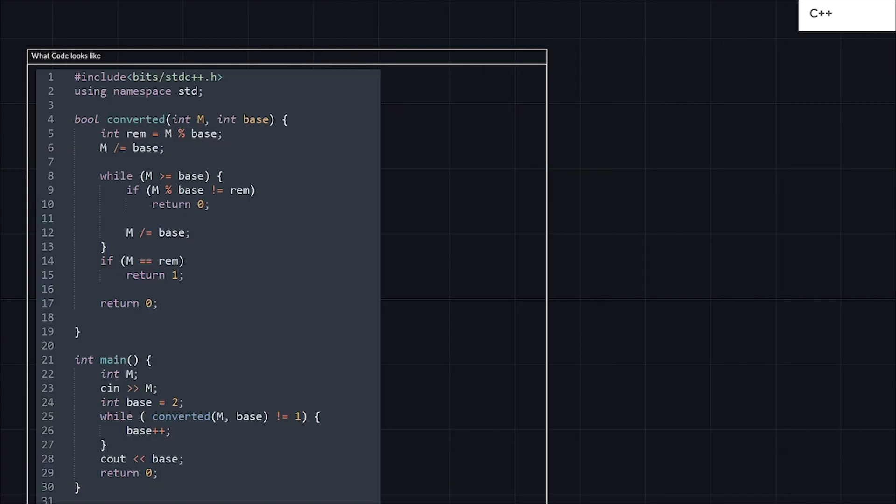Let's see what we can write for the code. In the main function I'm taking the input for M and I'll start from base 2, because in base 1 nothing will occur. From base 2 I want to check. What I will do is I will check like converted, if M and N both are the parameters in the converted function, and if it is not equal to 1 I'll increase the base until I get the answer. If I get the answer I'll return the base because I will come out of this while loop.